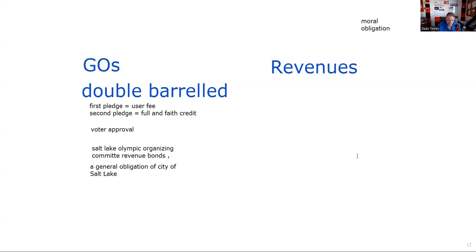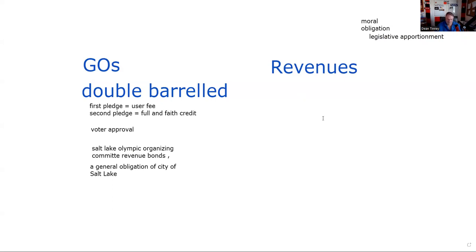If you buy these bonds, the confirmation says: 'John C. Fremont Hospital Revenue District bonds, a moral obligation of the state of California.' That is not a double barrel bond. It does not require voter approval. If these bonds default, they go to the state legislature and take a vote — all in favor of paying back the moral obligation bondholders say aye. That's called legislative apportionment. They have a pretty good track record. But it is not a general obligation bond — it goes in the revenue category.